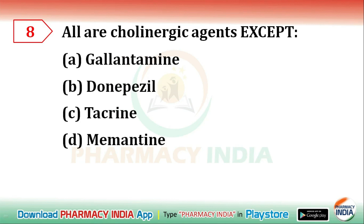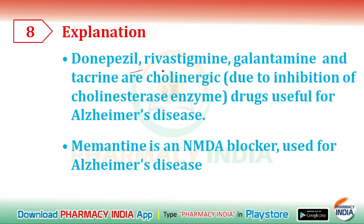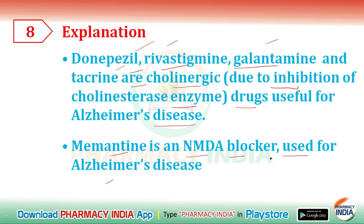Next question: all are cholinergic agents EXCEPT — galantamine, donepezil, tacrine, or memantine? The correct answer is memantine. Donepezil, rivastigmine, galantamine, and tacrine are cholinergic drugs useful for Alzheimer's disease — they inhibit the cholinesterase enzyme. Memantine is an NMDA blocker used for Alzheimer's disease, and is not a cholinergic agent.